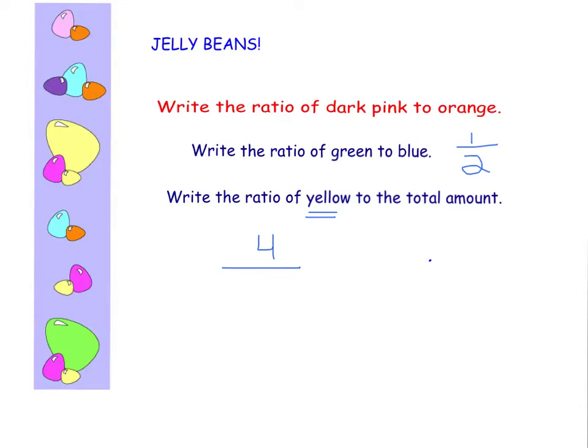So writing ratios, they look like a fraction. One, two, three, four, five, six, seven, eight, nine, ten, eleven, twelve, thirteen, fourteen, fifteen, if I counted that correctly. So ratios look like fractions, but they're comparing two quantities.